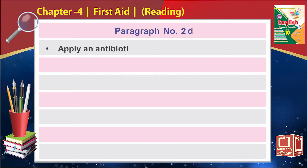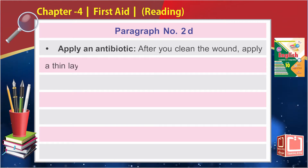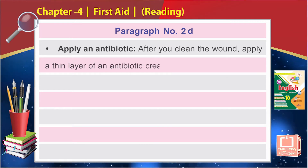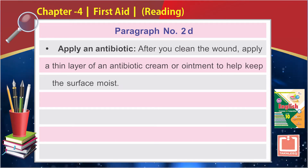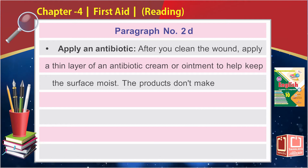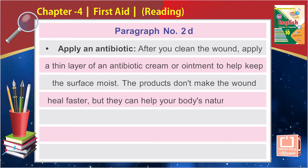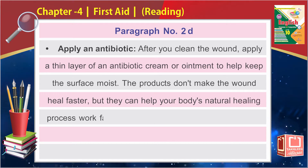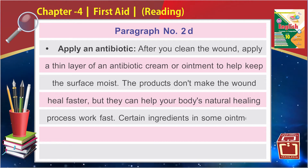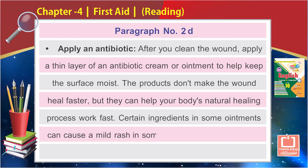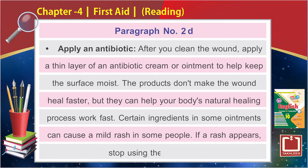Apply an antibiotic after you clean the wound. Apply a thin layer of an antibiotic cream or ointment to help keep the surface moist. The products don't make the wound heal faster, but they can help your body's natural healing process work fast. Certain ingredients in some ointments can cause a mild rash in some people. If a rash appears, stop using the ointment.